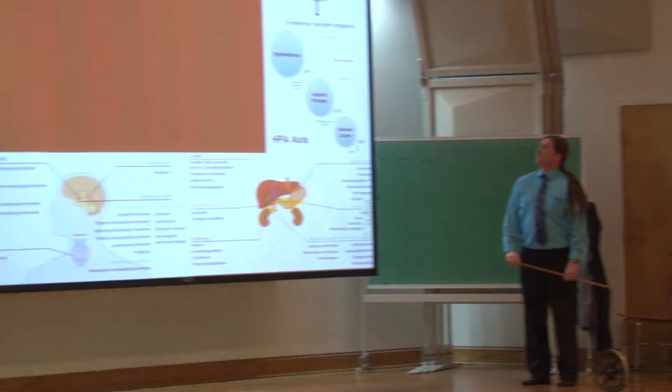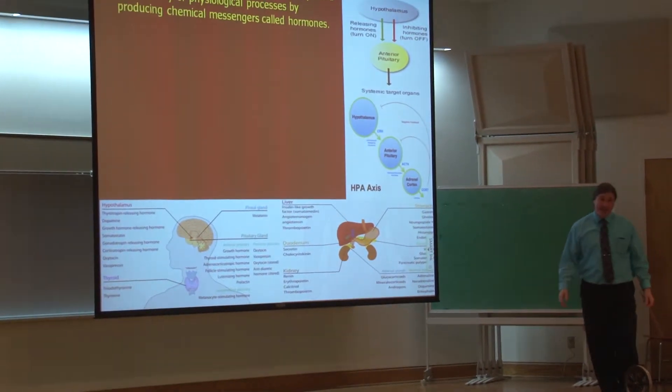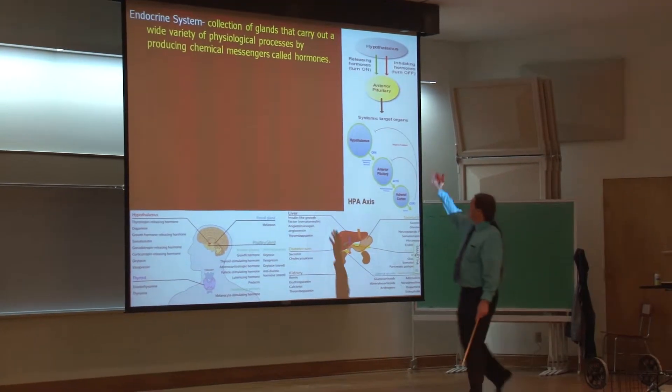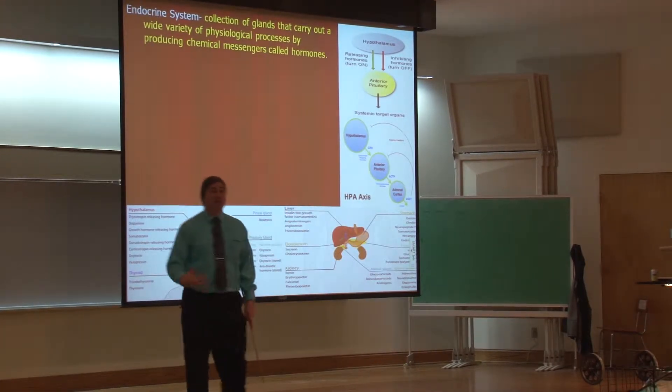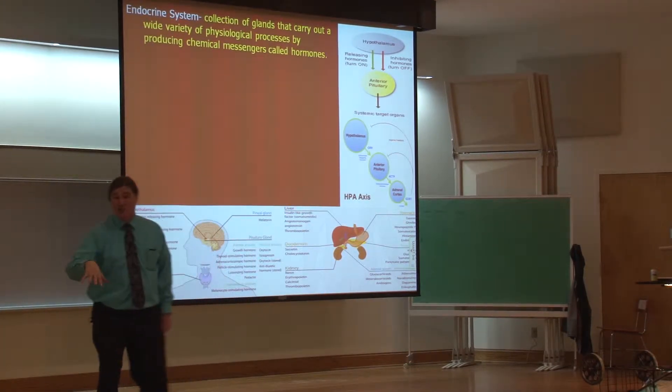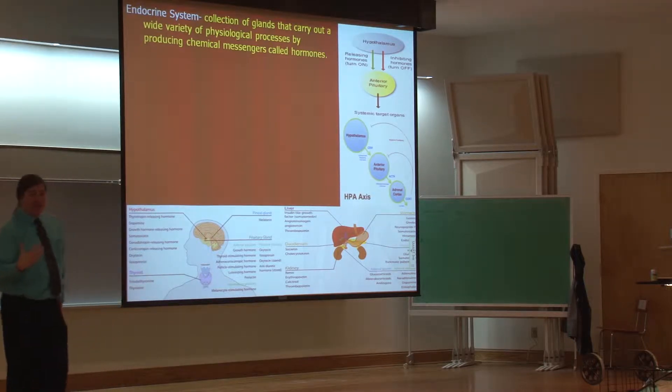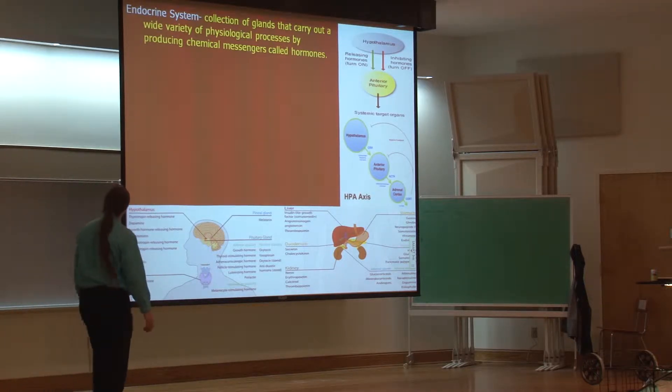I got an endocrine system, a collection of glands all over the body that carry out a wide variety of physiological processes that are absolutely critical to our survival and our experience as human beings. What we feel is the experience of being alive, the human experience.